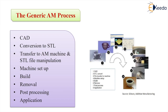Following the CAD-to-STL conversion, we have the machine setup for the additive manufacturing process, then we make the part, followed by certain post-processing steps, and finally use the part for its intended application. These are the steps involved in generating an additive manufacturing product.